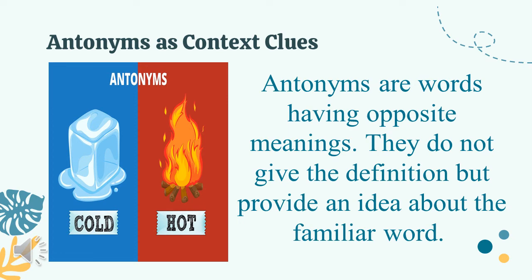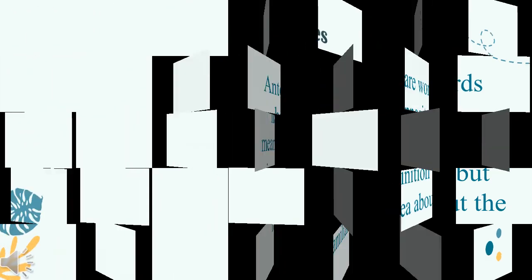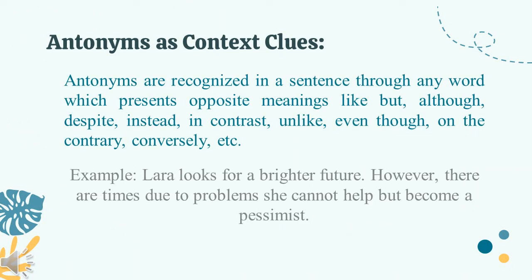For example, the word 'cold' is opposite in meaning to the word 'hot.' Antonyms are recognized in a sentence through words which present opposite meanings like: but, although, despite, instead, in contrast, unlike, even though, on the contrary, conversely, etc.